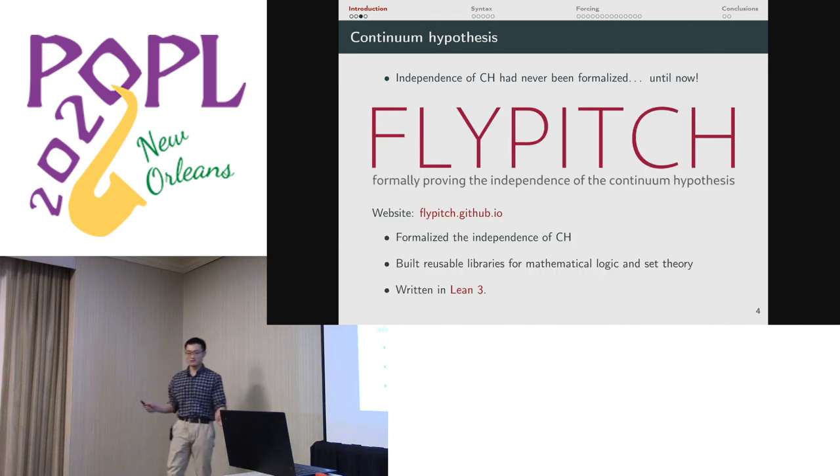So now it has been formalized in the Flypitch project. We did the independence of CH. We did it in Lean 3. We wrote it in a modular way such that people can continue using our implementation of first-order logic and model theory. So if you want to keep doing model theory, do the hyperreals the right way, then you can because it's all available.